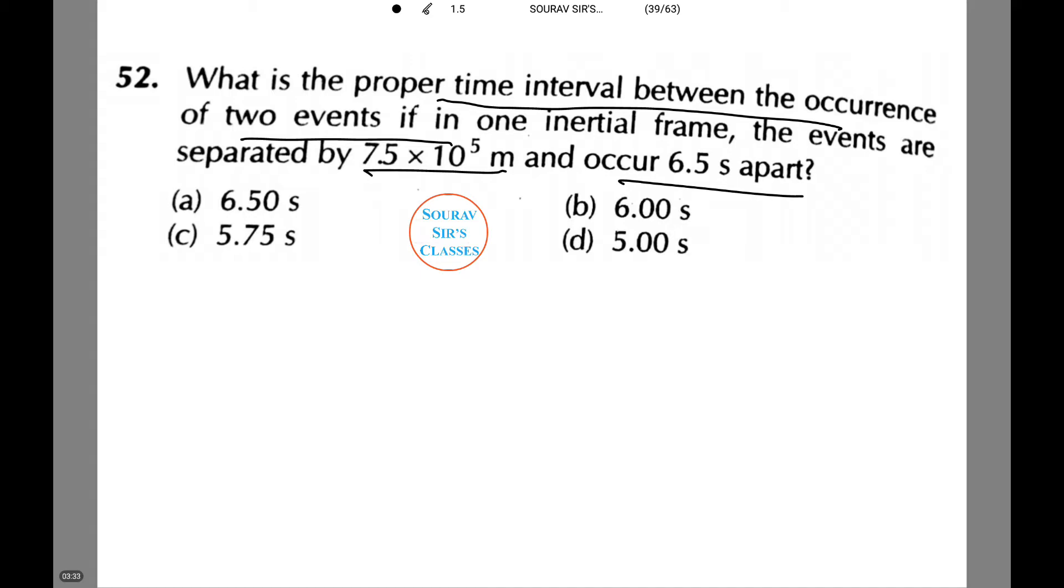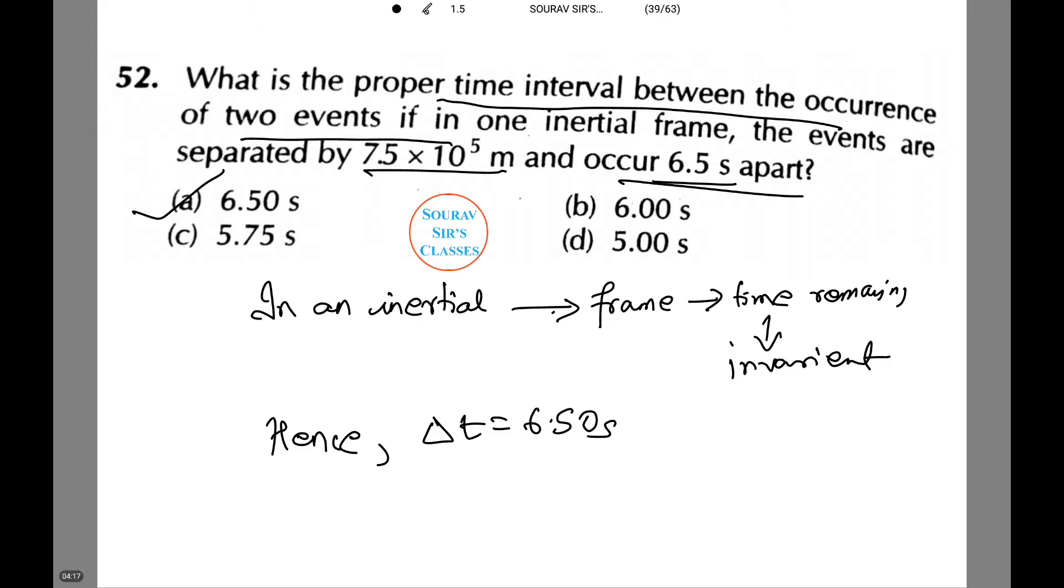Now let's see what the calculation will be. The answer is there will be no calculation. This is because in an inertial frame, time remains invariant. Hence, Δt equals 6.5 seconds, which is the answer that is already there in the question. Thus option A is the correct answer.